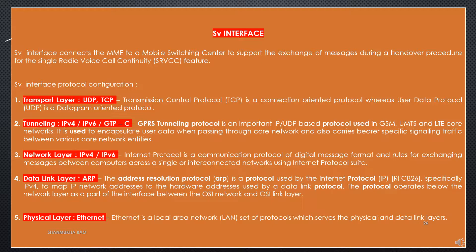The SV Interface connects the MME to a mobile switching center to support the exchange of messages during a handover procedure for the single radio voice call continuity feature. SV Interface Protocol Configuration: first is the transport layer where UDP or TCP is used — Transmission Control Protocol is a connection-oriented protocol whereas User Datagram Protocol is a datagram-oriented protocol. Second is tunneling where IPv4 or IPv6 UDP GTP-C is used — GPRS Tunneling Protocol is an important IP/UDP-based protocol used in GSM, UMTS and LTE core networks; it encapsulates user data and carries bearer-specific signaling traffic between core network entities.